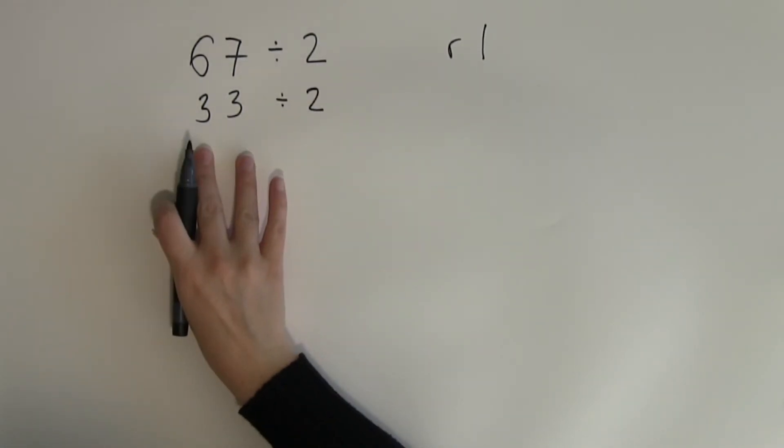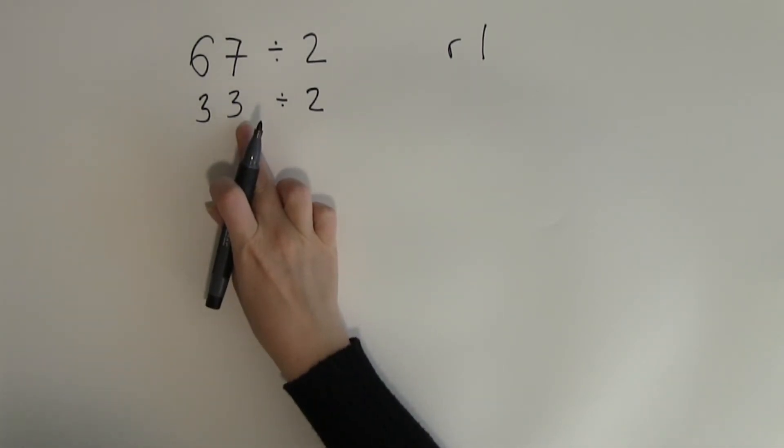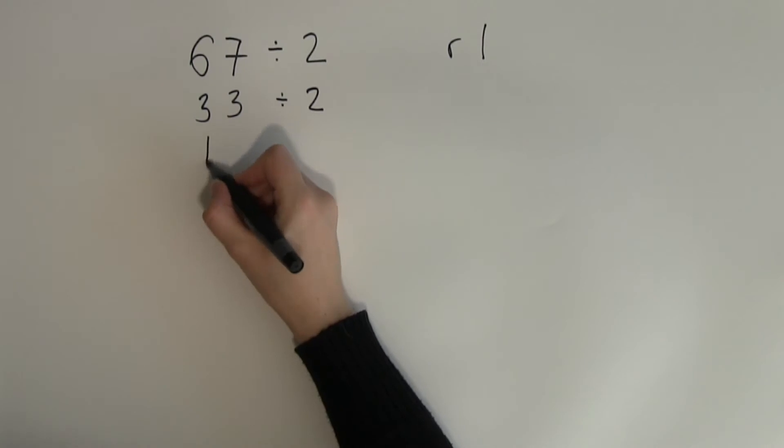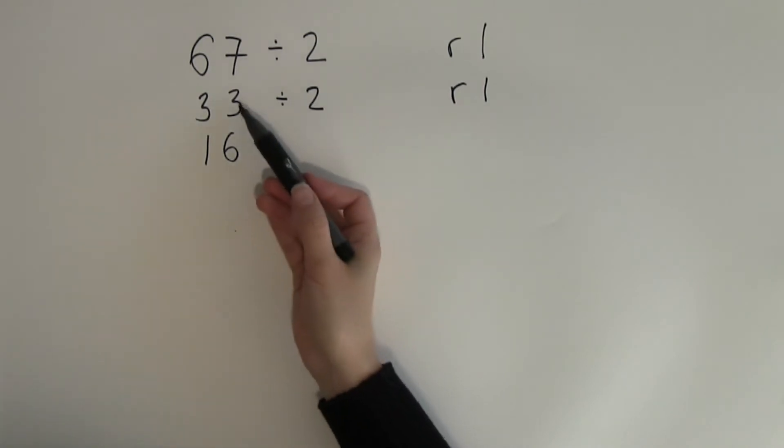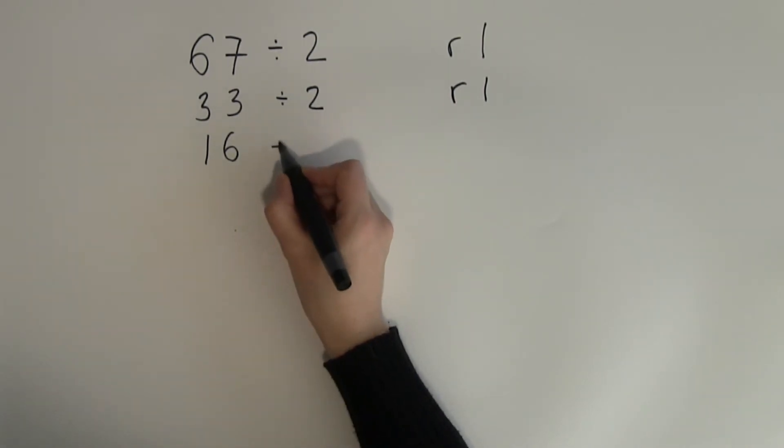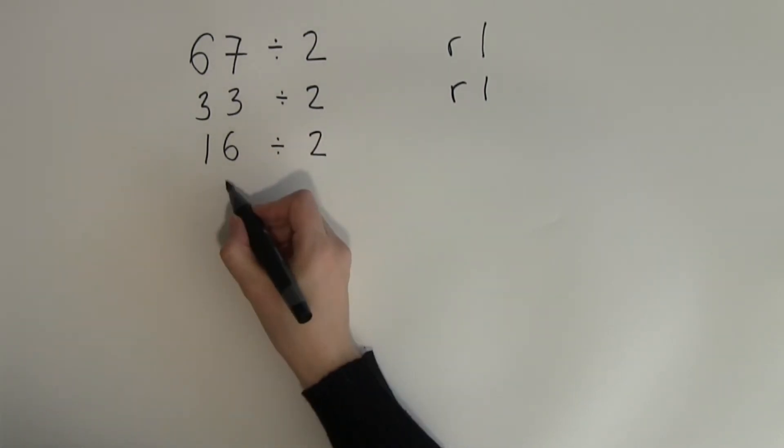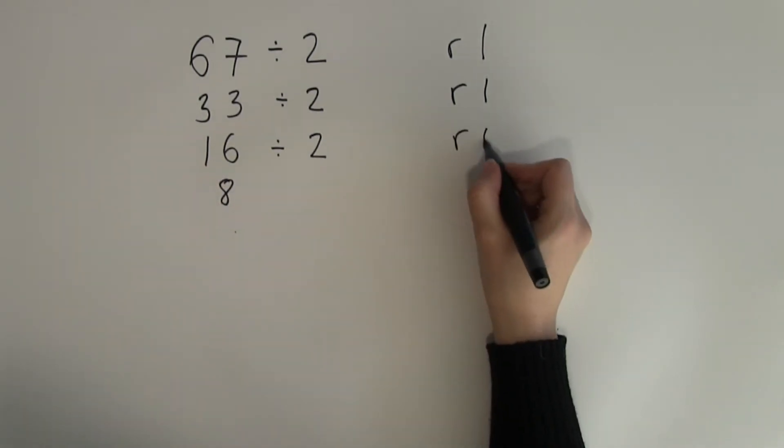30 divided by 2 is 15 and 3 divided by 2 is 1 so this will be 16 and remainder 1. The double of 16 is 32 and the other one gives 33. 16 divided by 2 makes 8, remainder 0.